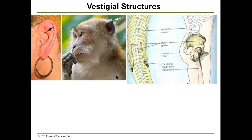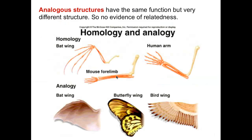Before moving on, there is a concept called convergent evolution. Species from different evolutionary branches may have certain structures that are superficially similar because they share the same living environment. The bat evolved a wing separately from the butterfly, which evolved a wing separately from the bird. But since they all need to move through the air, they converged on this flat, broad structure called a wing — that is convergent evolution.